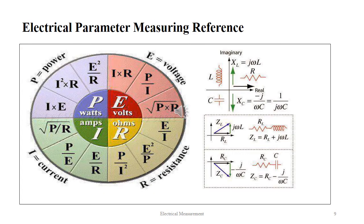Here we see the electrical parameters as measuring references. Principally there are four electrical parameters: voltage, power, current and resistance. The resistance, also called impedance, can further be classified into three components: resistance, inductance and capacitance.